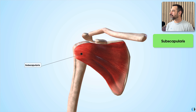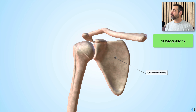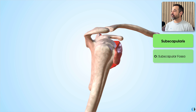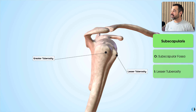Finally, we have the subscapularis muscle. Unlike the others, this large muscle is located on the anterior surface of the scapula, as you can see here. It originates from the subscapular fossa, which fans across the whole anterior surface of the scapula. And unlike the others, which all insert into the greater tuberosity, the subscapularis is the only rotator cuff muscle that inserts into the lesser tuberosity — located on the medial side of the humerus, compared to the greater tuberosity on the lateral side.